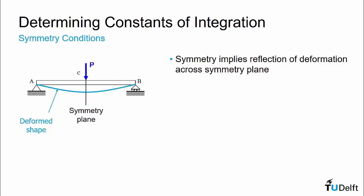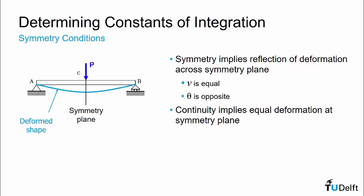The last boundary condition we can use for determining constants of integration is a symmetry condition. If our problem has a plane of symmetry, then we know that the deformation has to mirror across that plane. So the deflection on either side of the plane have to be equal and the slopes have to be opposite. The beam deformation, however, also needs to be continuous. As a result, the displacement and slope of the beam have to also be equal at the symmetry plane. If we apply both of these sets of constraints, they seem to be conflicting — how can the slopes be opposite but yet the same? Simultaneously applying these constraints leaves only one solution: the slope at a symmetry plane must be zero. This is known as a symmetry condition.